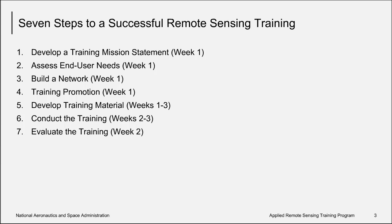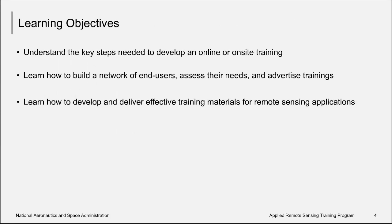All of these topics fall into what we consider seven steps to a successful remote sensing training. One can break these steps down further or even add steps to the sequence, but that will be particular to your program. For our set, we have worked off a model which begins with a mission, knowing your end user needs, developing a network, promoting and developing and conducting your training, to evaluation of your trainings — not only of the training itself, but its efficacy, impact, and finding future needs, which can guide future iterations of a training life cycle. The learning objectives throughout the three weeks will be to understand the key steps to developing on-site and online trainings, how to build a network and promote, and how to conduct these trainings.